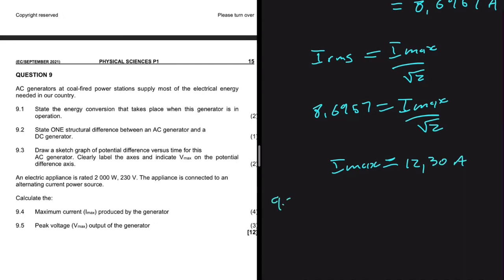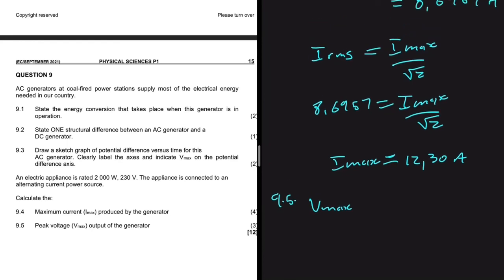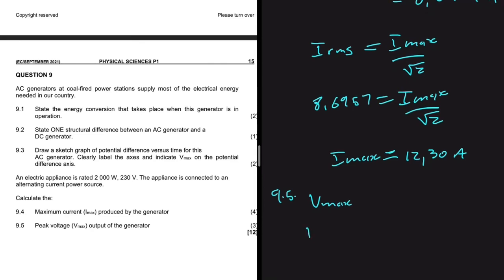And then 9.5 says let's find the peak voltage. So we're looking for V-max for the output of the generator. So what's the relationship between VRMS and V-max? Very similar to IRMS and I-max. So we're saying that VRMS will be equals to V-max divided by the square root of 2.